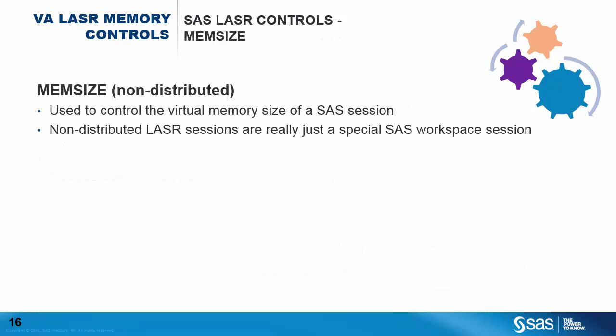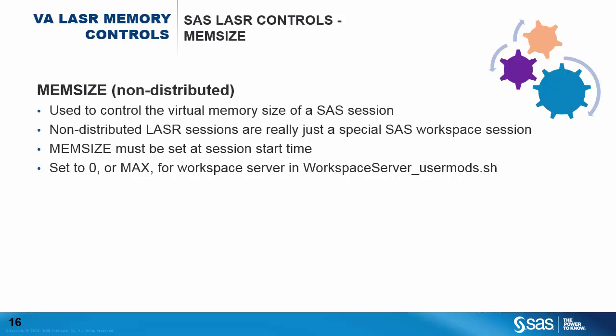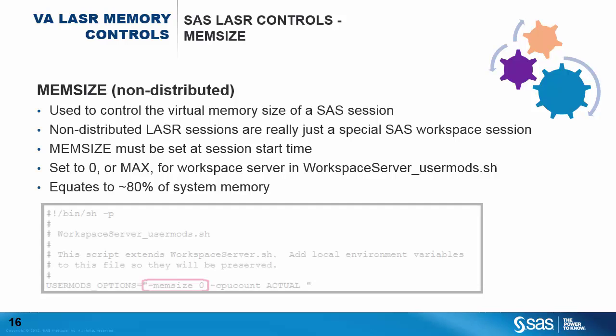The MEMSIZE option has been used for years to control the amount of virtual memory allocated to a SAS session. A LASR server is really a special instance of a SAS workspace server in a non-distributed deployment, and as a result MEMSIZE can also be used to control memory for a non-distributed LASR server. Since MEMSIZE specifies the amount of memory for the process, it must be set at session start time and cannot be adjusted afterward. When Visual Analytics is deployed, this parameter is set to zero, which is the same as setting it to max — the actual value used is approximately 80% of system memory. The default setting is specified in the Workspace Server User Mods script, and a change here applies to all LASR servers within that application server context. MEMSIZE is the preferred method of controlling memory on non-distributed LASR deployments.